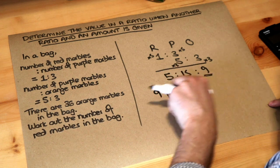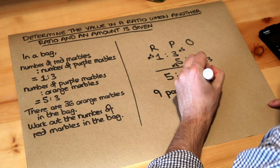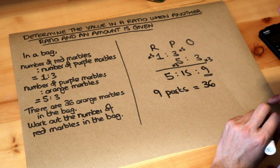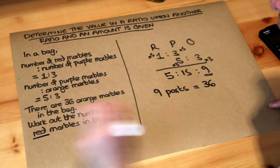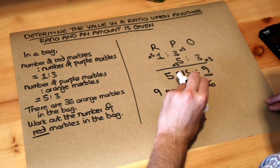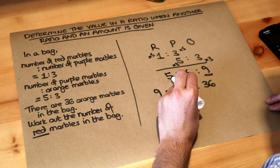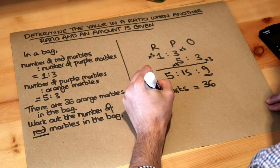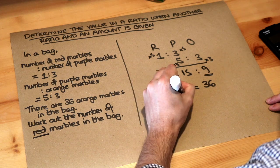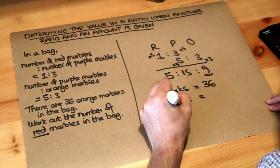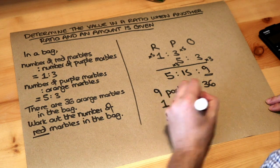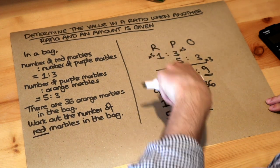And we want to work out the number of red marbles in the bag. How many parts of red? Well red is five parts in this ratio, so remember we always go via one part so we're going to work out one part and therefore five parts because that will be the number of red marbles, five parts red here.